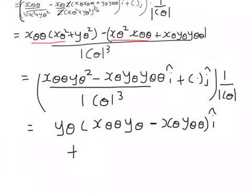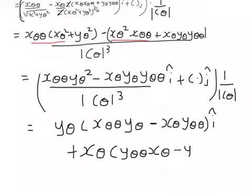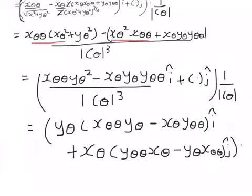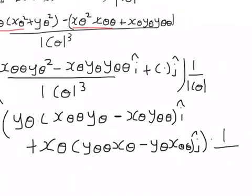The j component becomes (x_θ·y_θθ·x_θ − y_θ·x_θθ)·j, and the whole expression is multiplied by 1 divided by the magnitude of c_θ.